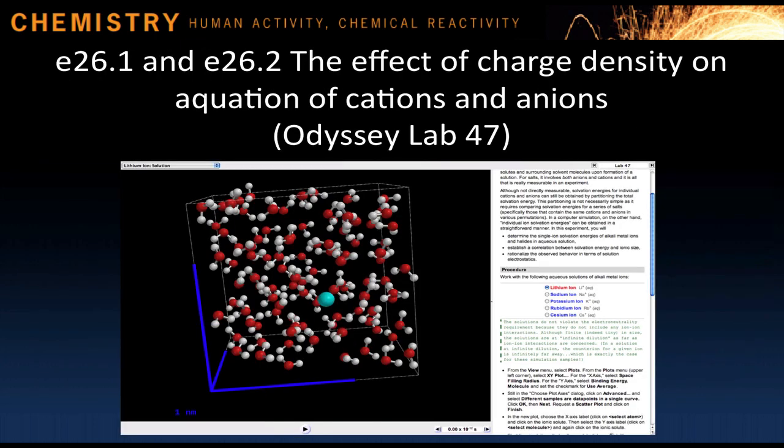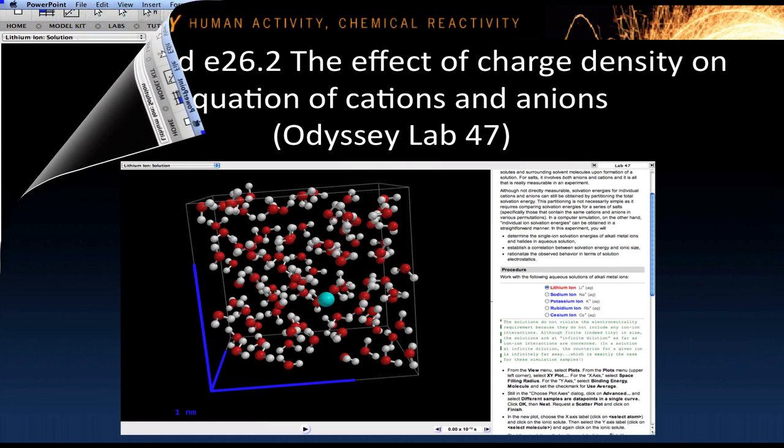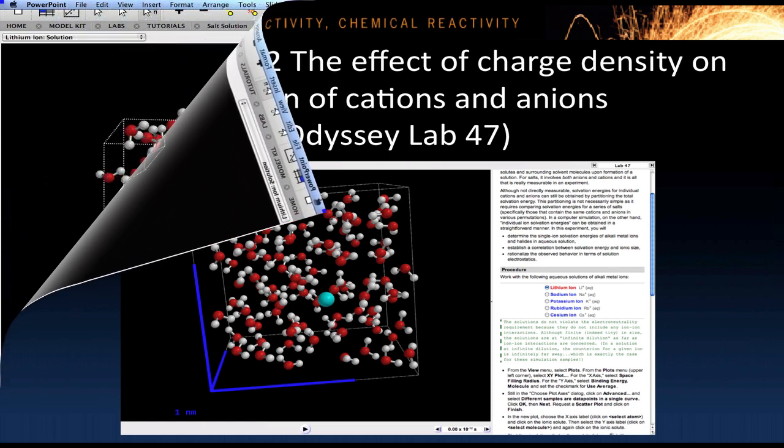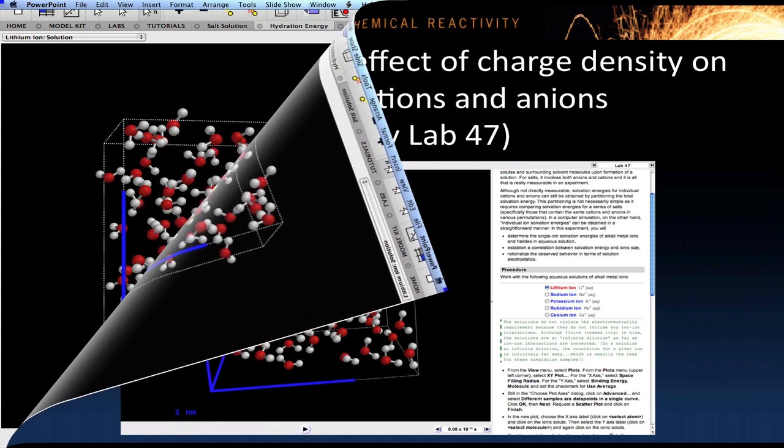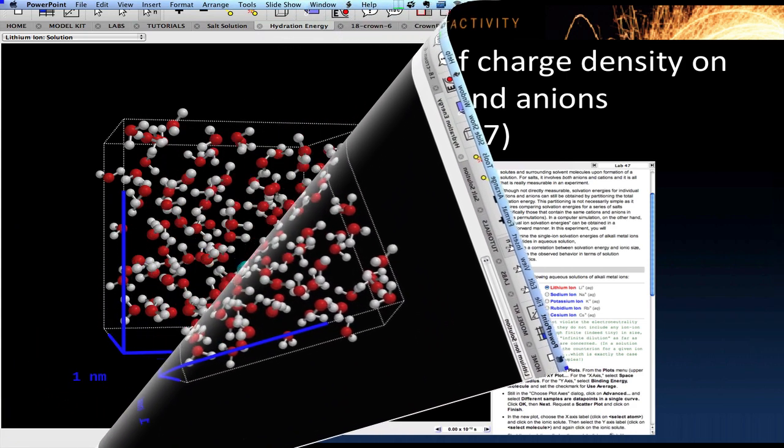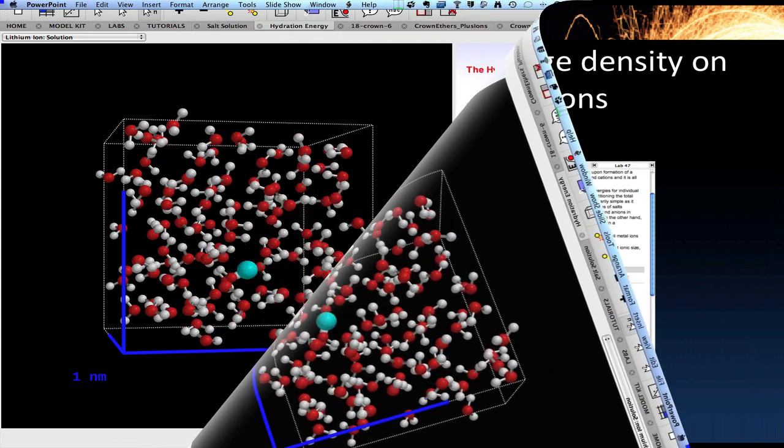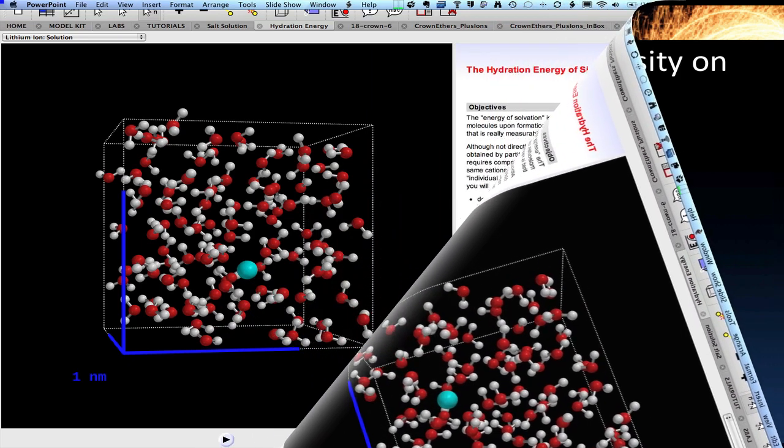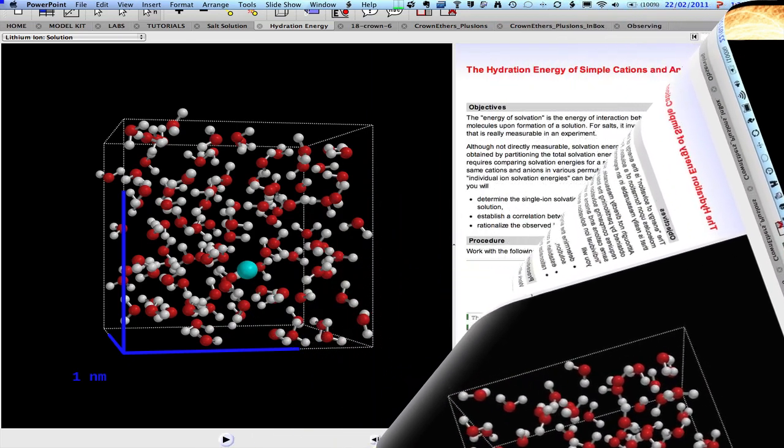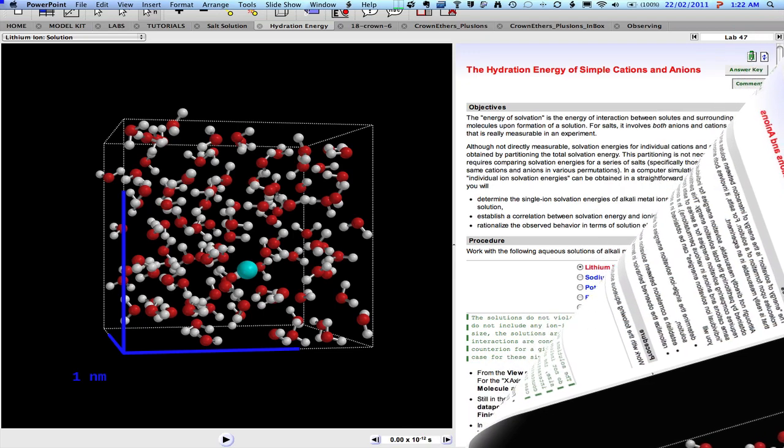In chapter 26 that deals with the chemistry of the main group elements and their compounds, the central explanatory concept is charge density. In eResources 26.1 and 26.2, we use the simulations of aquated monatomic cations and anions. Despite the radius of the potassium ion being almost twice that of the lithium ion, the lithium ion moves much more slowly through water.